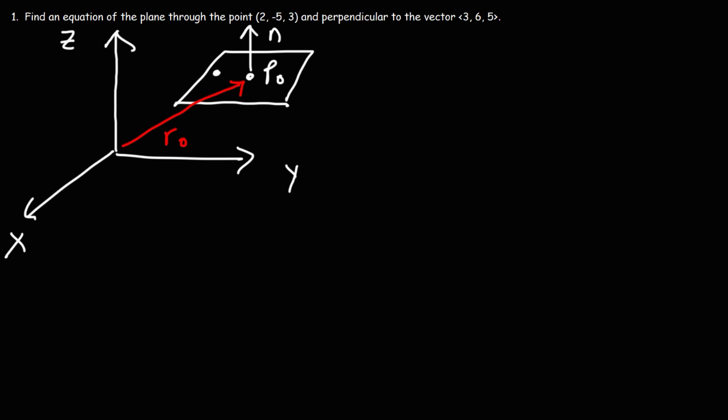And we're going to have another point on this plane, which we'll call P. And so we're going to have a position vector that points towards that as well, which will be R. Now going from P0 to P, this is going to be another vector, which we'll call R minus R0.